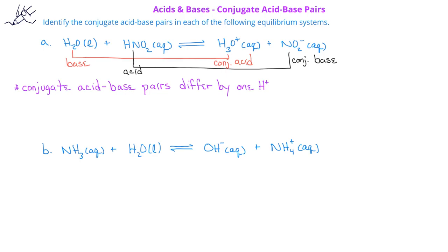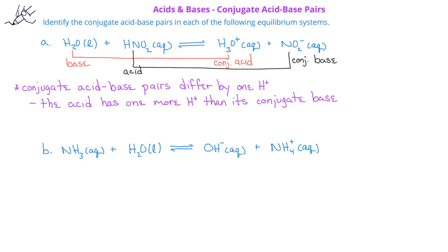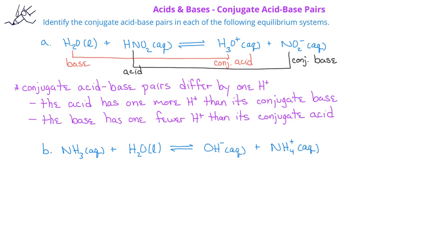Now we can make another important note. When we have a conjugate acid-base pair, the acid of the pair will be the species that has one more hydrogen ion than the other species. The base of the conjugate acid-base pair will be the species that has one fewer hydrogen ion than the other compound in the conjugate acid-base pair.